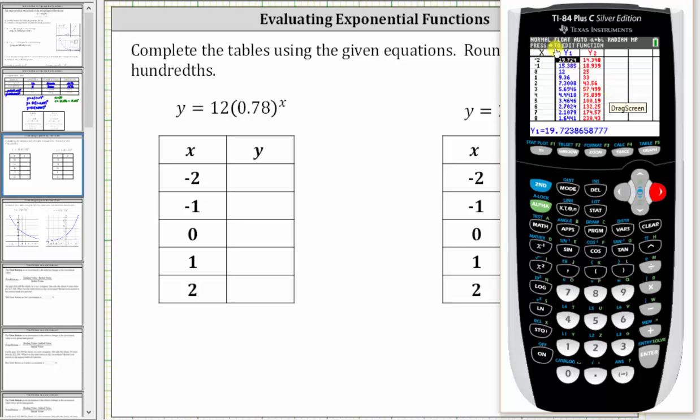So notice when x is negative two, y is approximately 19.72 when rounding to the hundredths place value. When x is negative one, notice how if we use the table, we would round to 15.39, but that would be incorrect because if we press the down arrow, notice how there's a four in the third decimal place, and therefore we should round down to approximately 15.38.